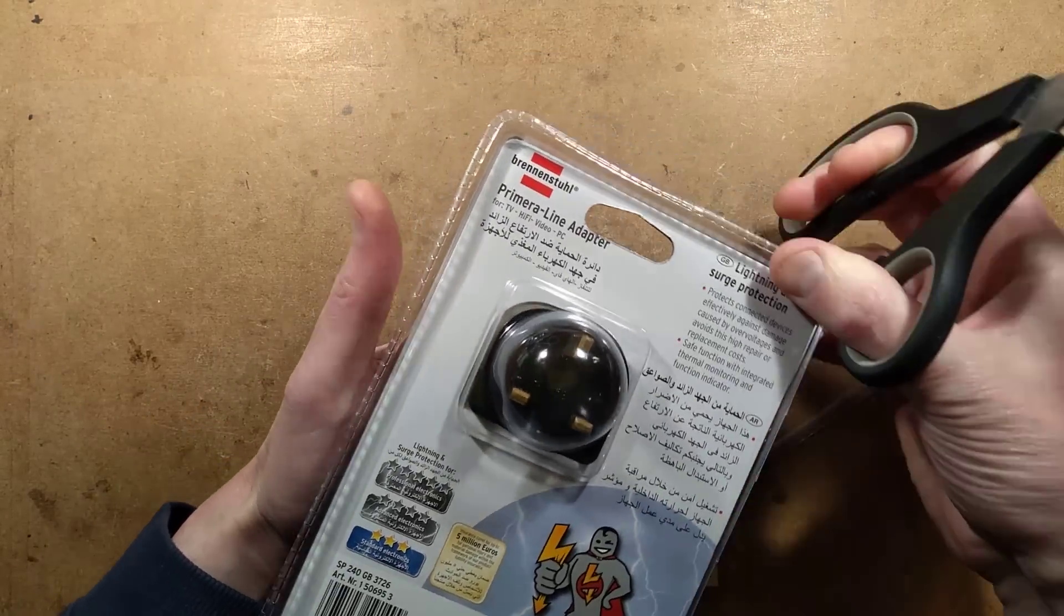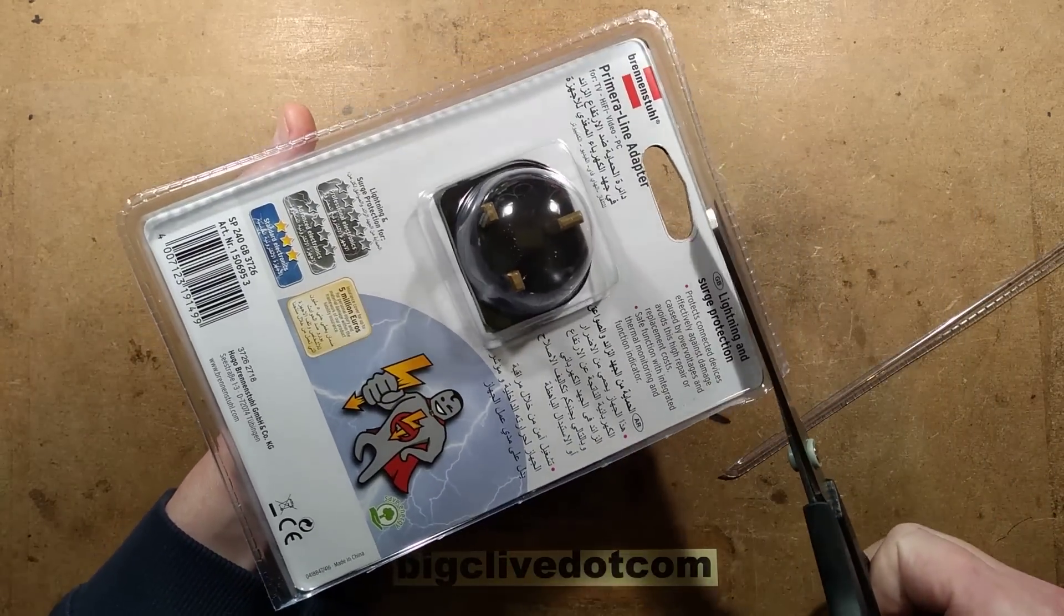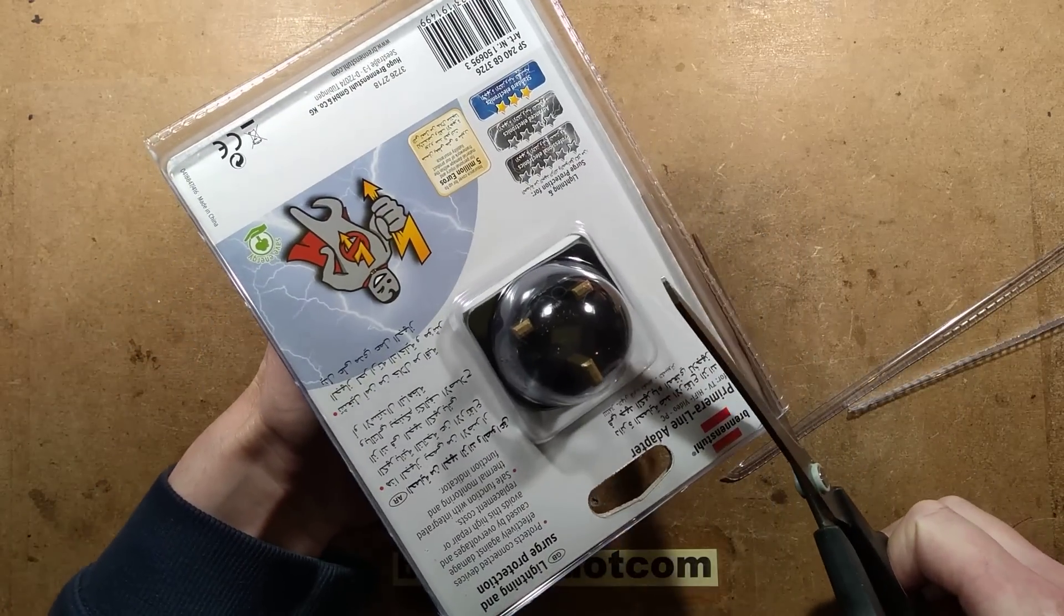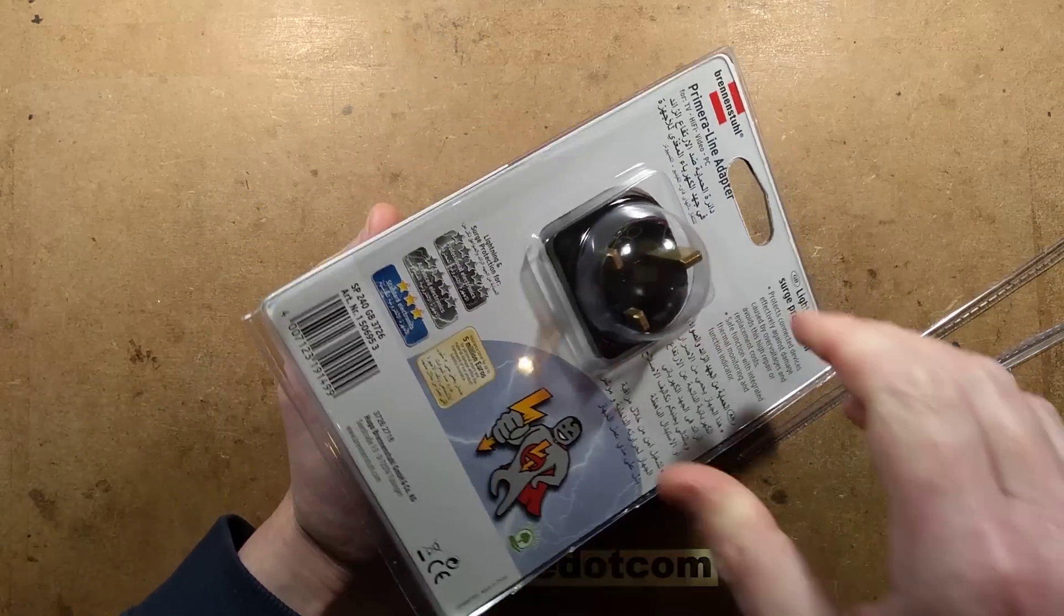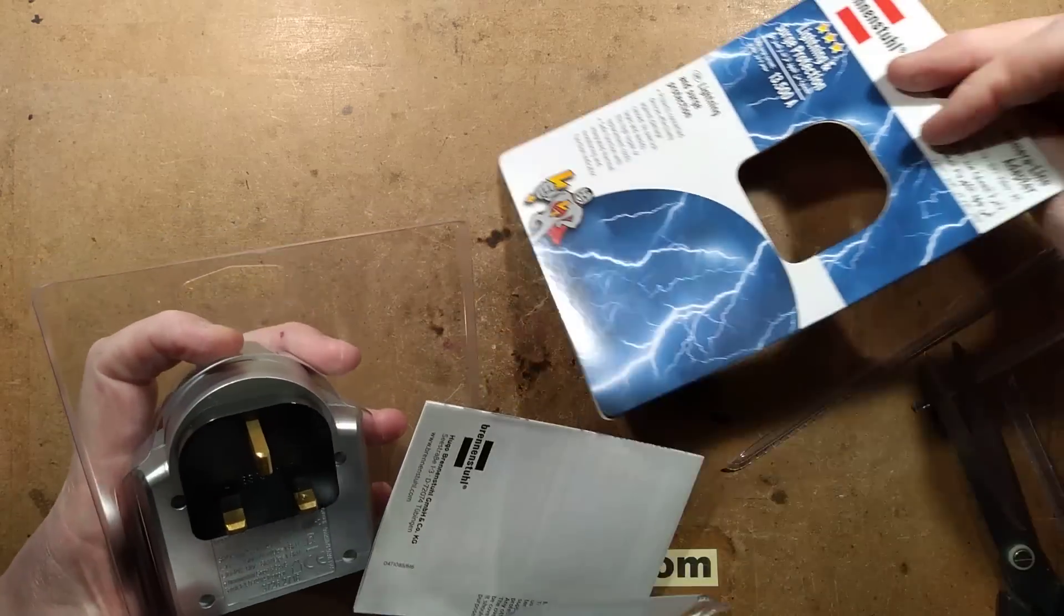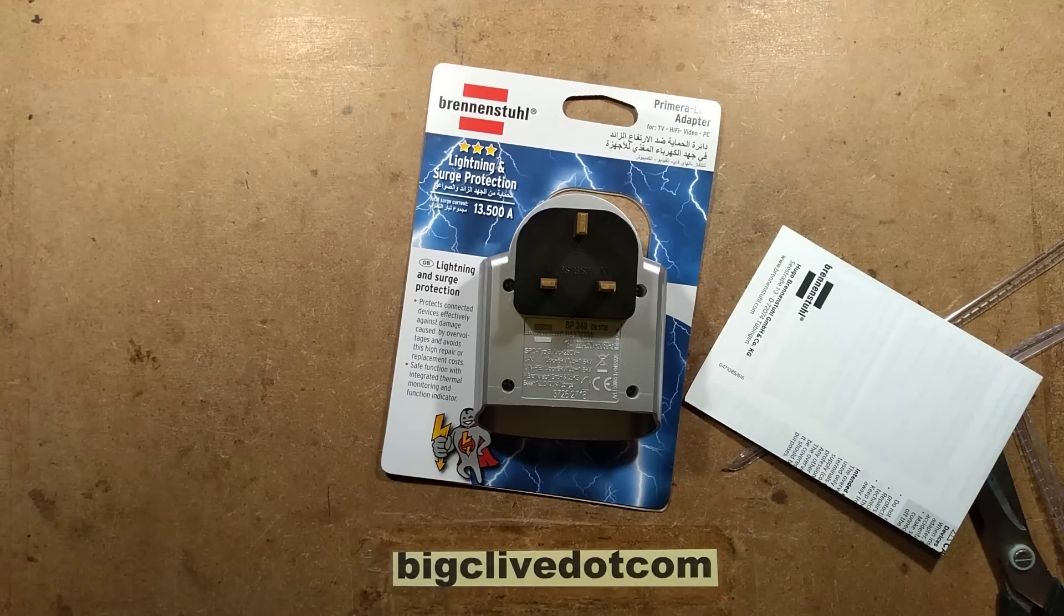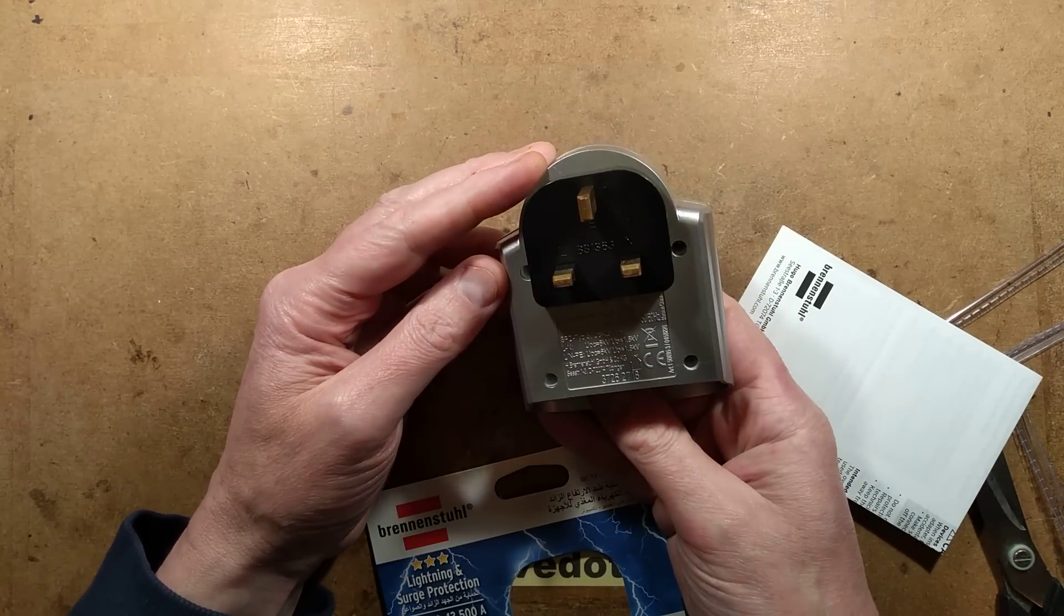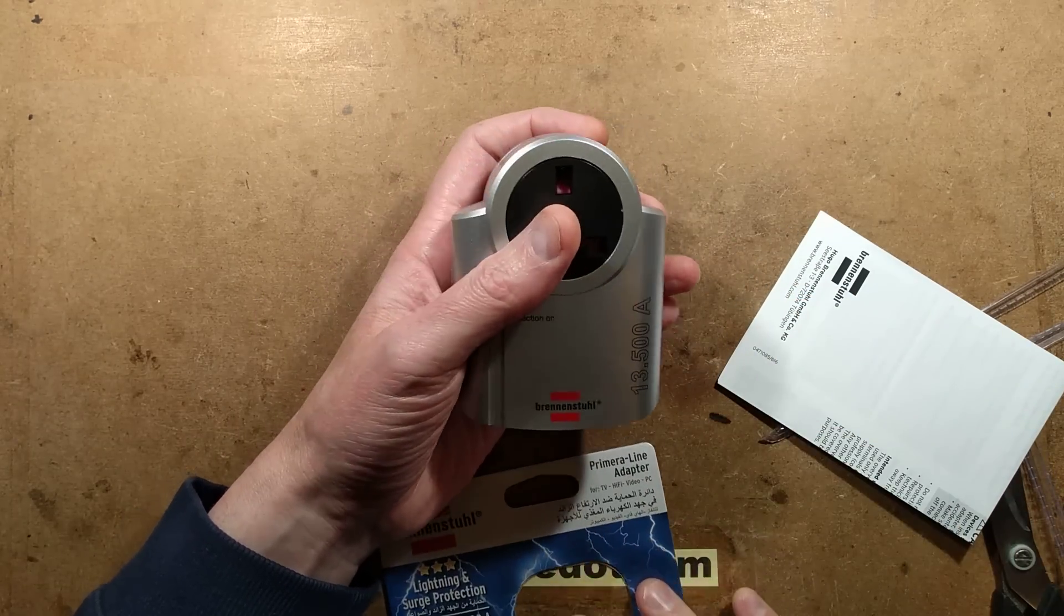Oddly the languages are, is that Arabic? So let's pop this open. I'm thinking there's a very good chance it's going to be VDRs, metal oxide varistors, voltage dependent resistors. It's quite slim, it's quite stylish. Oh no and it's got triangular screws, that's not good. I'm going to have to bring in...